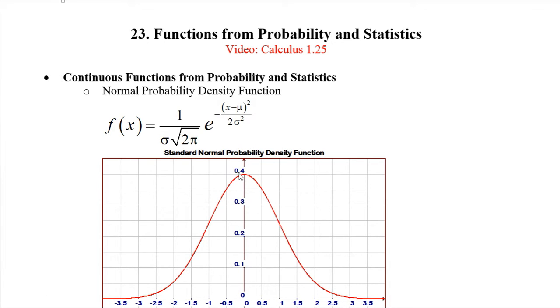It turns out that the maximum happens right when x is mu, or for the standard normal when x is zero, and that happens right there. How high it is depends on the value of sigma. It's not quite 0.4 here, it's close to 0.4 but not exactly. And we get what's called a nice bell-shaped curve here.